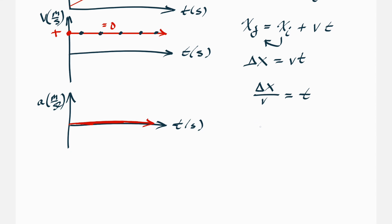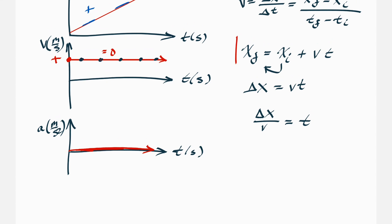For example, a toy car in a room that's 5 meters long going at 1 meter per second: 5 meters divided by 1 meter per second equals 5 seconds. This one simple equation — x final equals x initial plus v times t — is the one to commit to memory. It gives you many different applications just by rearranging to solve for whatever variable you need.